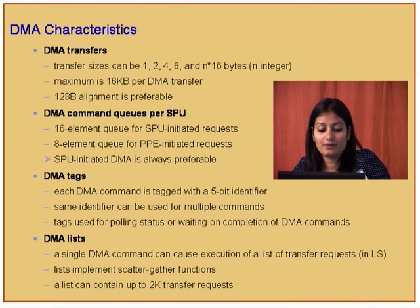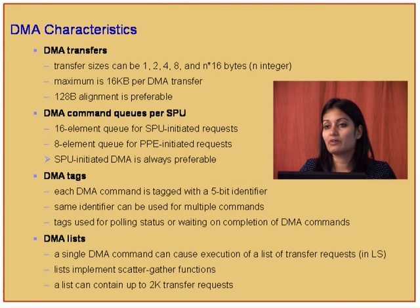Command queues are 16 elements for SPU-initiated requests and 8 elements for PPU requests. There is something called a DMA list — a scatter-gather mechanism where the SPE can initiate a DMA list that asynchronously fetches memory from wherever it's available in the effective address space. This happens asynchronously while the program executes on previously fetched data. The advantage of the DMA list is that it's a solution to fragmentation in the effective address space — it grabs data wherever it is, maintains it in a list, and processes the whole data set asynchronously.